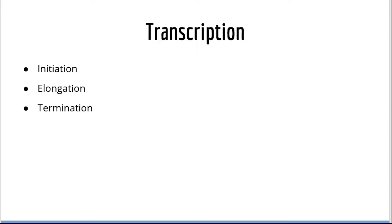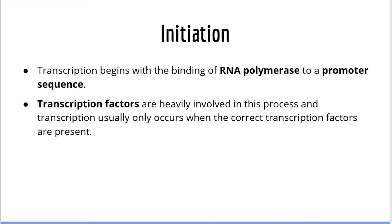As we mentioned in previous videos, transcription can be divided into three steps: initiation, elongation, and termination. The first of these steps, initiation, begins with the binding of RNA polymerase and various transcription factors to DNA. Once the appropriate transcription factors are present, RNA polymerase is able to bind a promoter and start synthesizing RNA. Let's take a closer look at this process on the next slide.